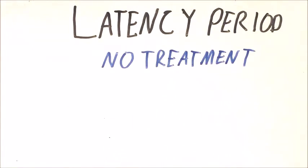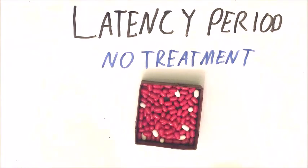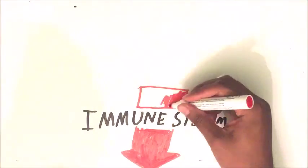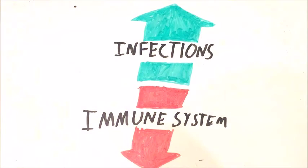Without treatment, the HIV virus starts to overwhelm the body and there is a decrease in the CD4 cells again. If the levels fall below 200 cells per microliter of blood, the patient is now said to have AIDS. And due to the low number of immune cells, the person is unable to fight off infections.